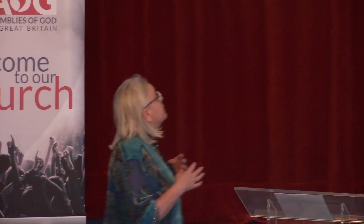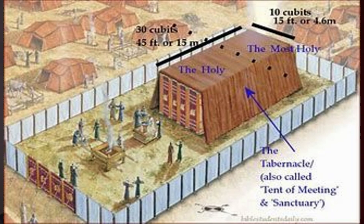Every section of the tabernacle represented the Godhead. We had the outside of the tabernacle — the outer court — which represents the Lord Jesus Christ. Then we go into the holy place or the tent of meeting, which represents the Holy Spirit, and the holy of holies represents God the Father. So the whole Godhead is in this tabernacle.